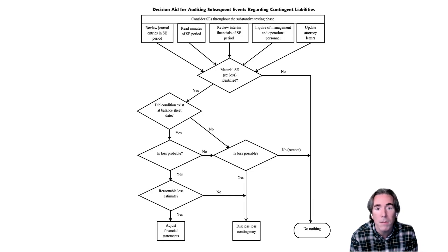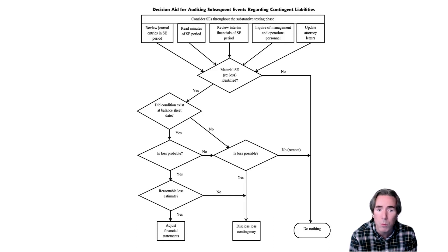The first path we have to follow is: did the conditions exist at the balance sheet date? If we assume it did, we're going to ask the question, is the loss probable? Notice that we have two boxes — probable and possible — because the underlying accounting standards treat them differently. If it is probable that we're going to have a loss, can the client reasonably estimate the loss?